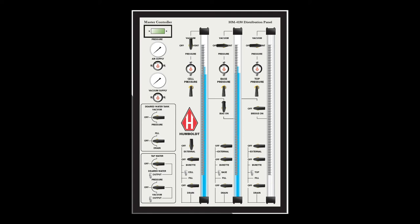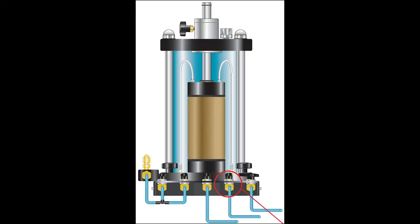From the test, deviator stress for the corresponding cell pressure can be obtained. For three different cell pressures, there will be different deviator stress. At the end, Mohr circle can be drawn based on the available data and the shear strength parameters C and phi can be determined from the Mohr circle.